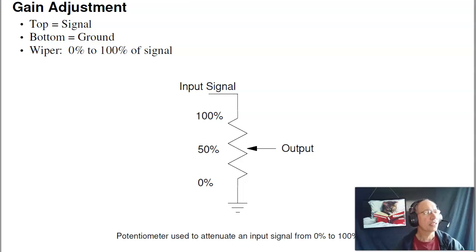Now the different uses of it. As mentioned, it's a gain adjustment. Take your input signal, tie it to one side of the potentiometer, tie the other side to ground, then the wiper will give you anywhere between 100% of the input signal, to half, to zero, as you turn the wiper.